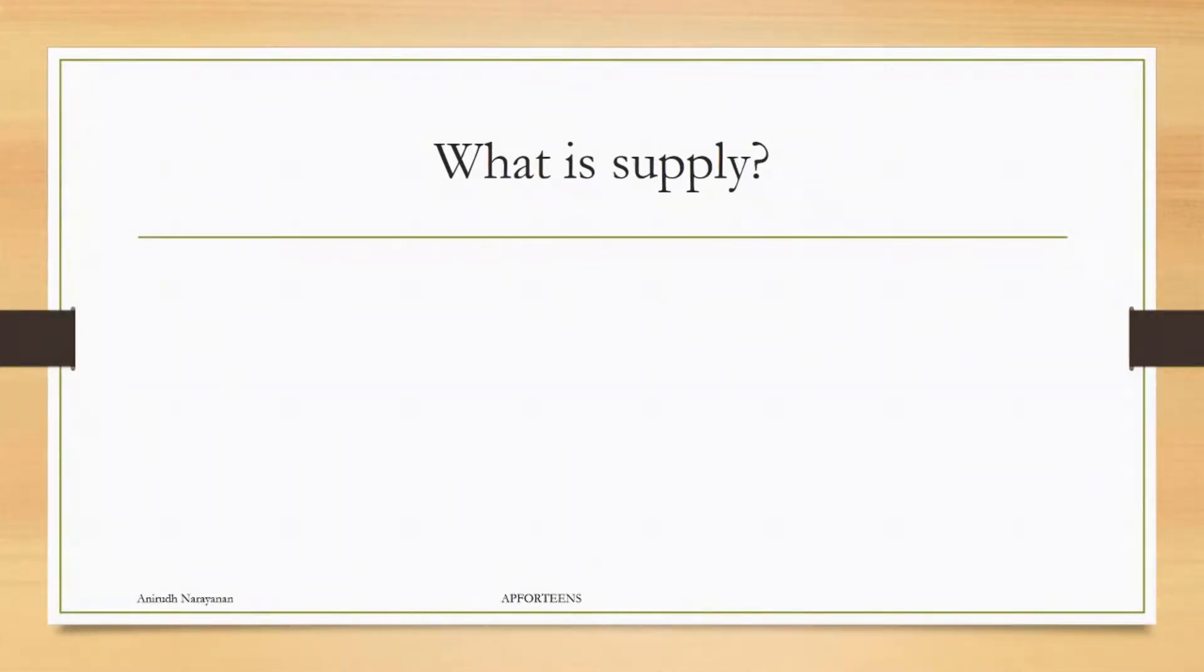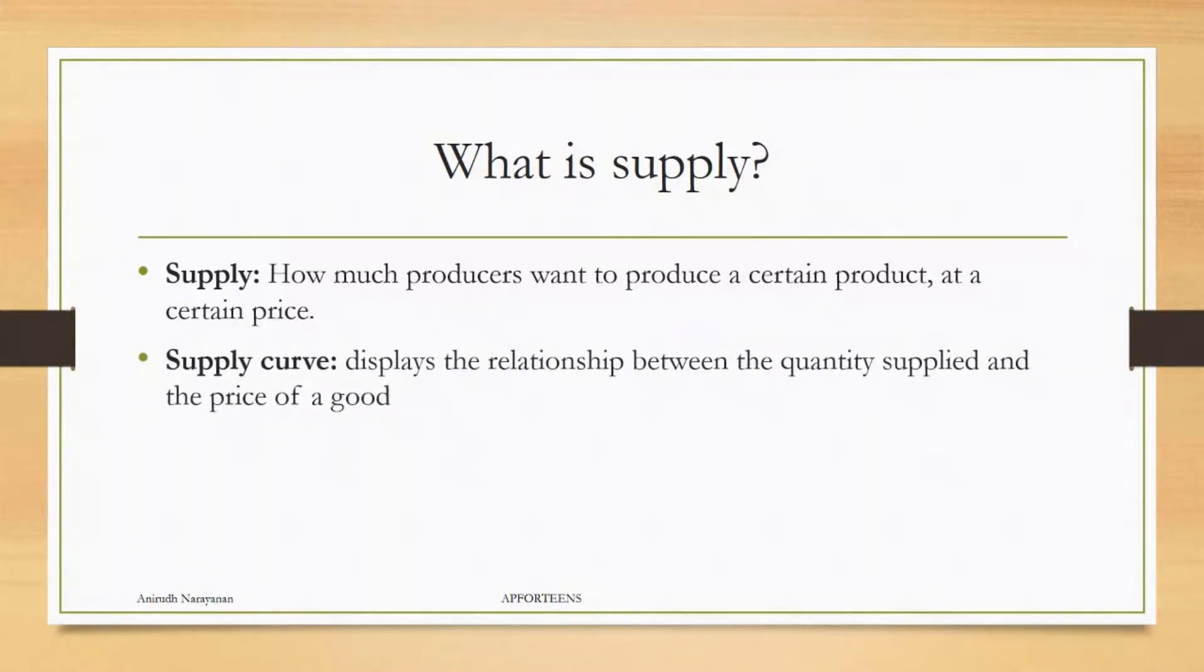What is supply? Well, supply is how much producers want to produce of a certain product at a certain price. And the supply curve displays the relationship between the quantity supplied and the price of that good. It's kind of like demand, how it displays the relationship between the quantity demanded and the price of the good.